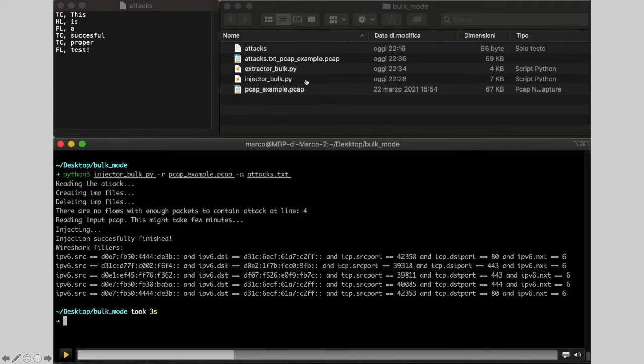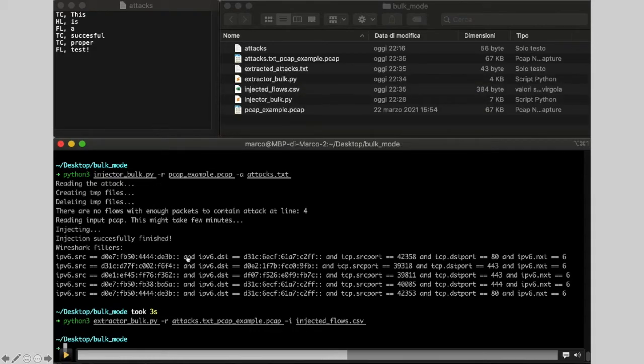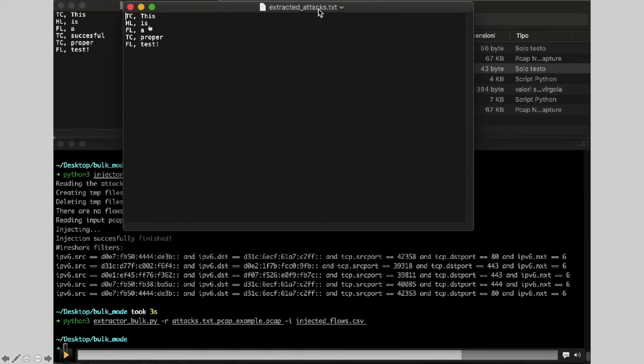And pcapStego produces, again, a pcap output file and a CSV file. Instead, for the extracting phase, again, the user should specify the pcap that he wants to parse and the CSV file containing all the information of the flows that are previously embedded. In this case, pcapStego produces another txt file, which contains what the tool found. If we open the file, we can see that everything is correctly injected and extracted, except for the case of the attack that we were not able to embed.